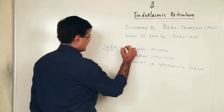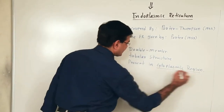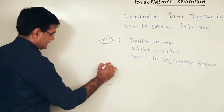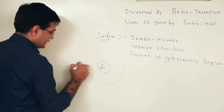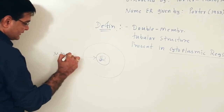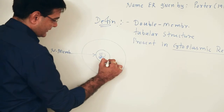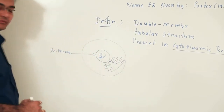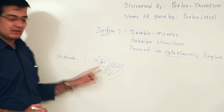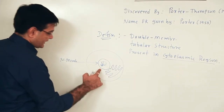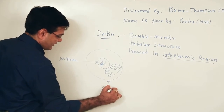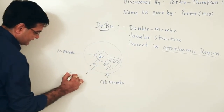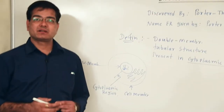The endoplasmic reticulum is a tubular structure found in the cytoplasmic region. If we draw the structure of an animal cell, the centrally located nucleus has a nuclear membrane. The endoplasmic reticulum remains associated with the nuclear membrane. It is a double membranous tubular structure extending from the nuclear membrane to the cell membrane in the cytoplasmic region.